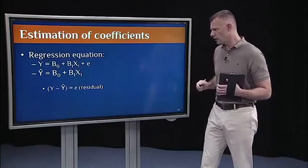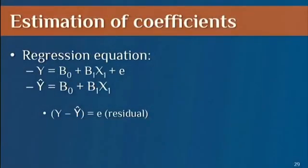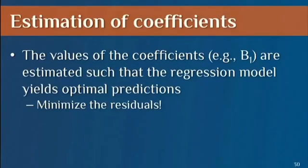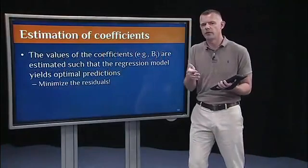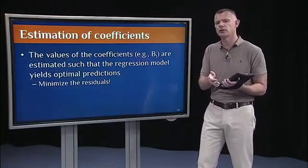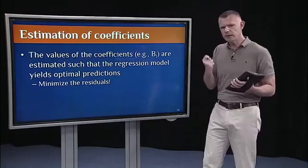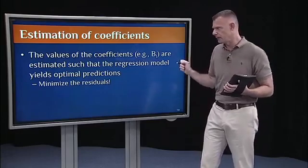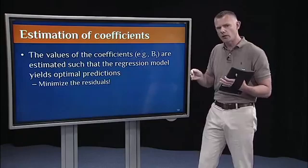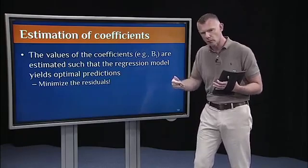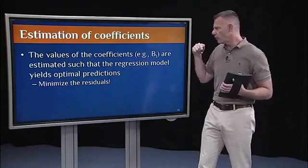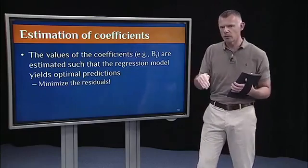So here's the regression equation. I can rewrite it as a function of the predicted score Y, and now I just have to estimate the regression constant and the slope. The key concept here, and the math is really easy, there's actually hardly any new math. If you remember how to calculate the correlation coefficient, that's basically the math. But there's a really important new concept right here. And that is that the values of the coefficients, and this is true for multiple regression, are estimated such that the regression model yields optimal predictions.